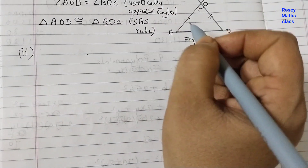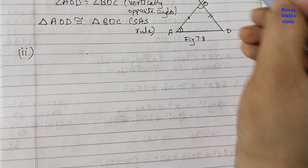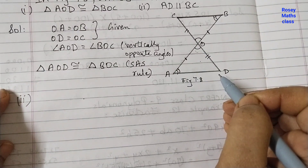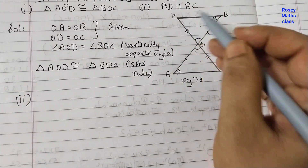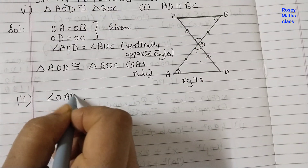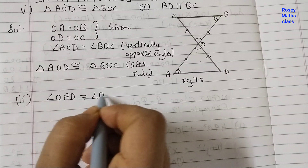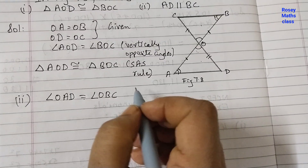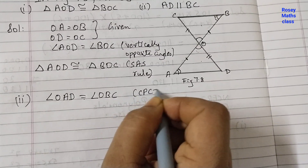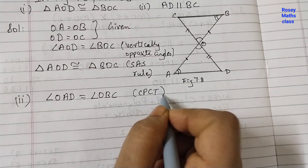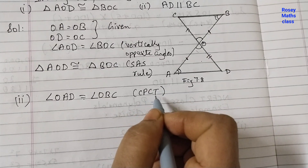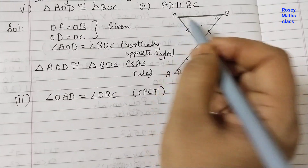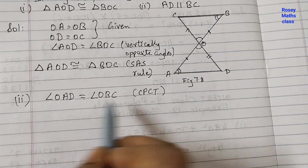This means angle OAD is equal to angle OBC. The reason you can write here is CPCT — corresponding parts of congruent triangles. CPCT means corresponding parts of congruent triangles are always equal — these two angles are equal, these two angles are equal, these two sides are equal.